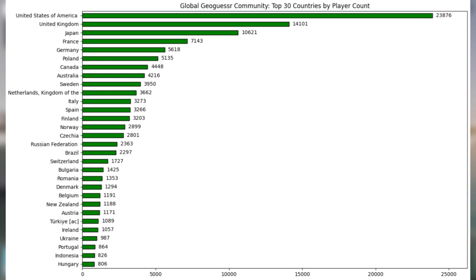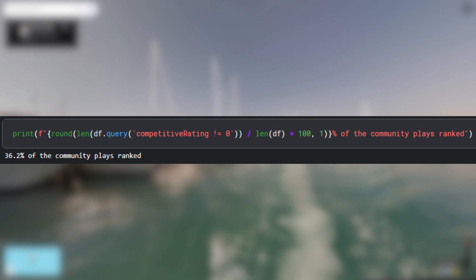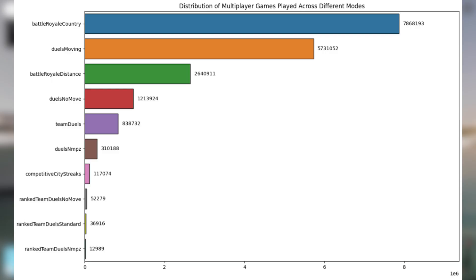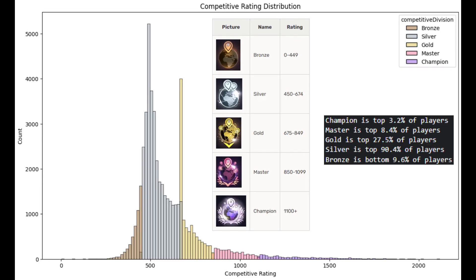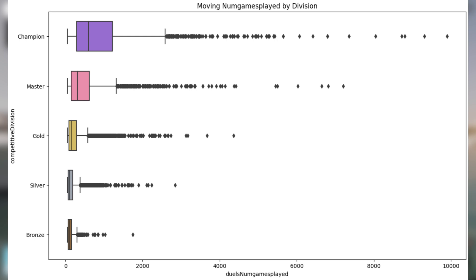Now let's dive into some data about the ranked system. 36.2% of the community plays ranked duels. We can also see that country battle royale is the most popular multiplayer game mode with almost 8 million games played, and that moving duels is the most popular out of the 1v1 game modes. Looking at the competitive rating distribution, a majority of the community is ranked silver, and there are also a lot of players sitting right at the bottom of gold tier with a 675 competitive rating. For the rest of these visualizations we will only be including moving duels, as some of the other dueling game modes are restricted until you reach a certain competitive rating.